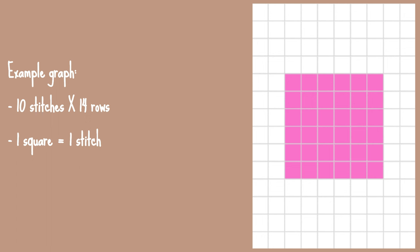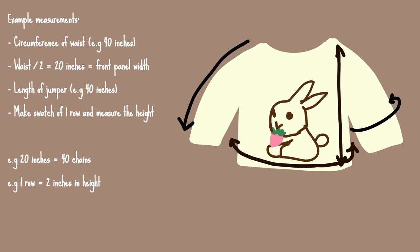So if your graph — for example, the bunny graph we're going to be using — is 44 stitches across, that means we'll be making a chain of 44 plus one, and then we'll be doing 48 rows. First I'm going to give you some example measurements, and then later I'll show you my actual measurements so you can follow the pattern exactly.